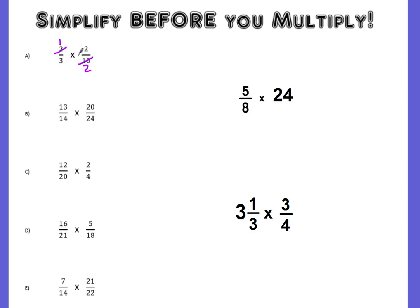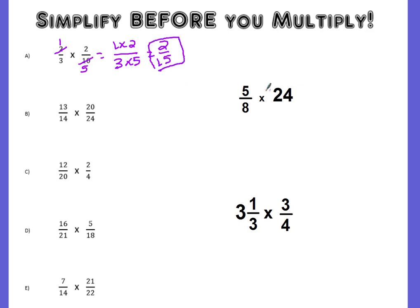Now I'm going to look at my other diagonal. I'm sorry — it's not a 2, it's a 5. 10 divided by 2 is 5. Now looking at my other diagonal, I have a 2 and a 3 — there are no common factors, so I'm done simplifying. To multiply, I would do my numerators: 1 times 2. And multiply my denominators: 3 times 5. 1 times 2 is 2, and 3 times 5 is 15. And we are already simplified.